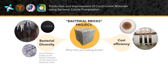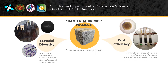Cost efficiency and use of local materials are also our focus. To keep costs down in bacterial brick production, we will use cheap alternative media formulated from common agricultural and industrial materials and by-products. We will also test the feasibility of using agricultural lime and waste such as eggshells and crab shells as sources of calcium to create the bio-cement.